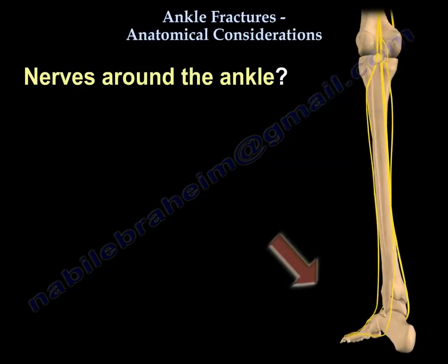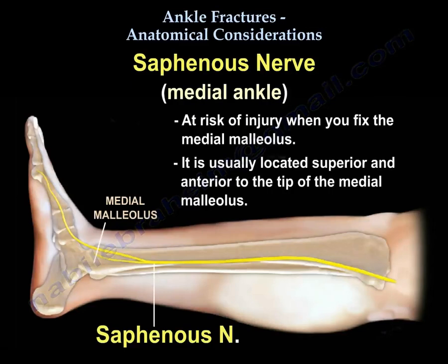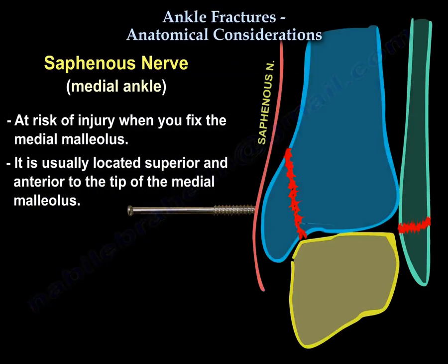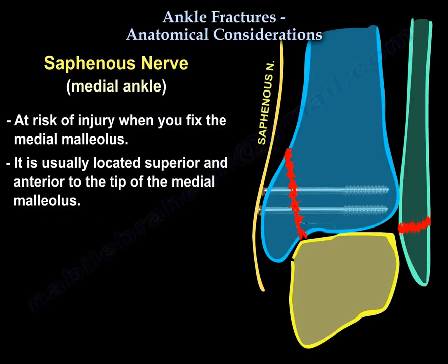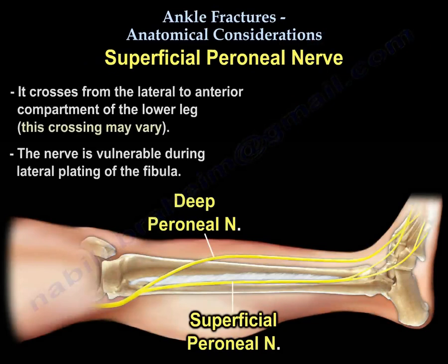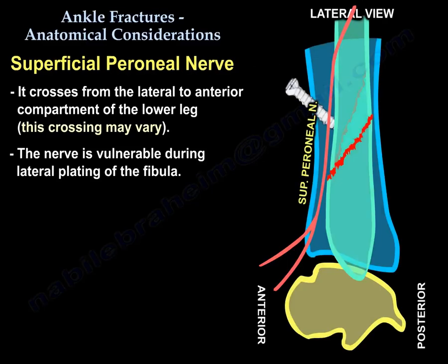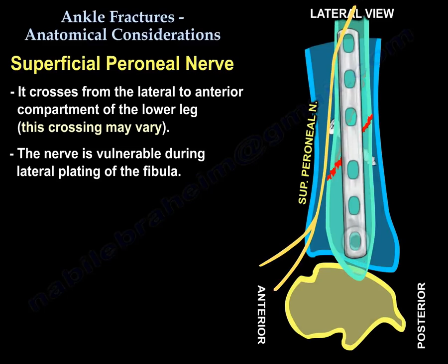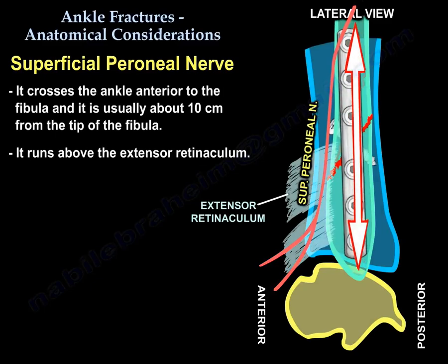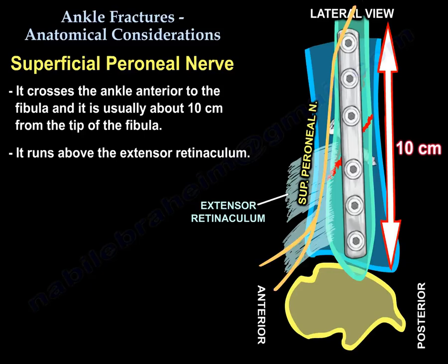There are three nerves at risk around the ankle. The saphenous nerve is at risk when fixing the medial malleolus — it is usually superior and anterior to the tip of the medial malleolus. The superficial peroneal nerve crosses from the lateral to the anterior compartment, and this crossing may vary. It is vulnerable during lateral plating of the fibula, crosses the ankle anterior to the fibula, is usually about 10 cm from the fibula tip, and runs above the extensor retinaculum.